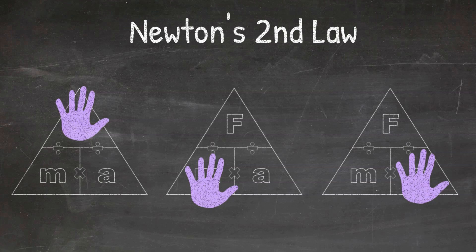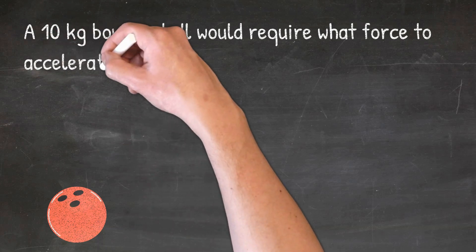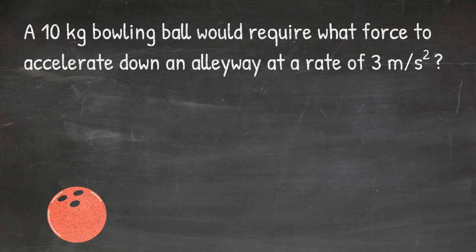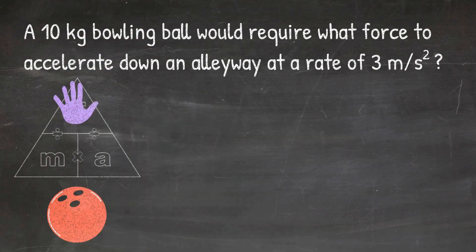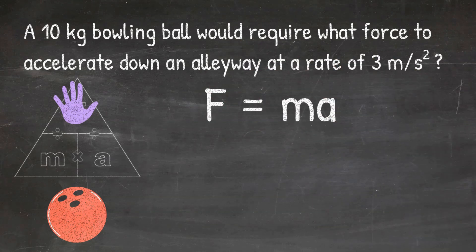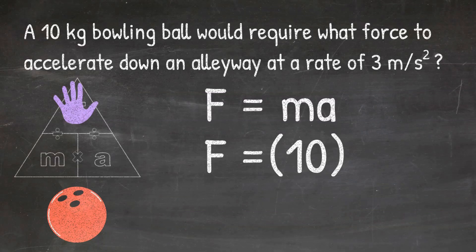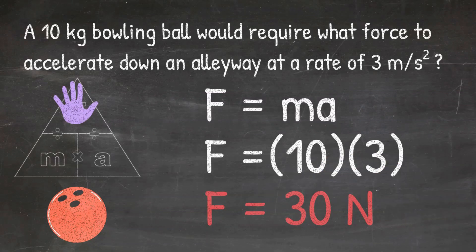Now let's look at some practice problems. Our first problem says: a 10-kilogram bowling ball would require what force to accelerate down an alleyway at a rate of 3 meters per second squared? The question is asking me to solve for F, so I cover up F in my triangle, which tells me to do mass times acceleration. So F equals MA: I plug in 10 kilograms for mass and 3 meters per second squared for acceleration, and 10 times 3 gives me a final answer of 30 Newtons.